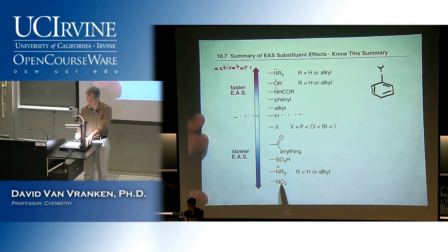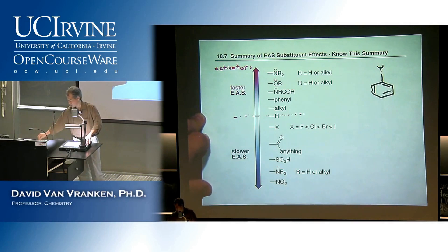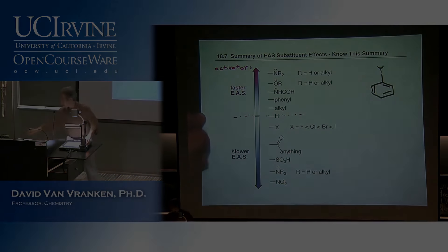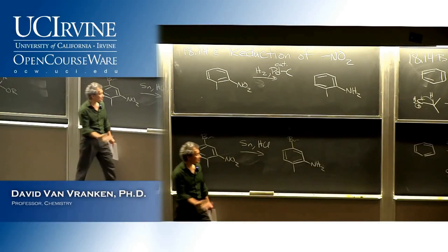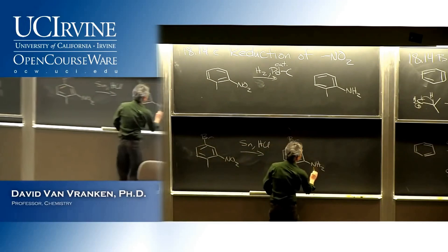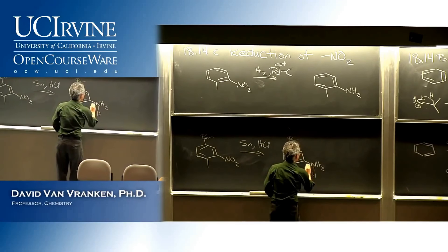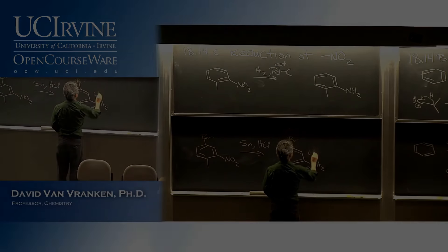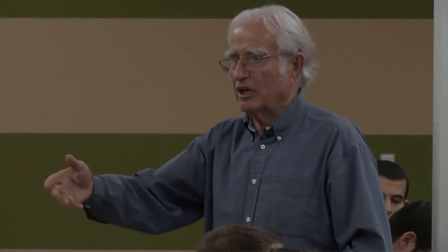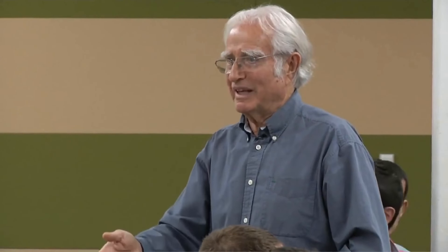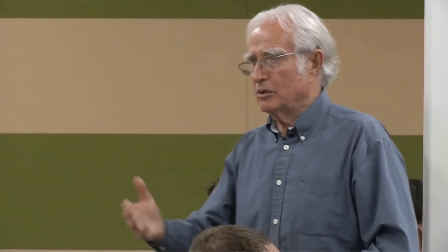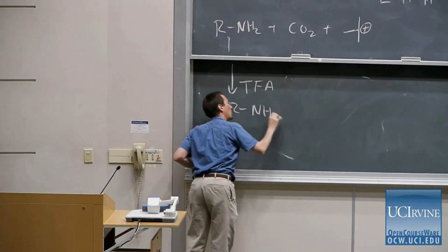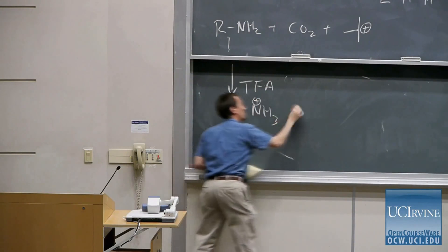Ammonium groups — nitro groups are the worst. The product of this reaction is actually an ammonium salt. Ammonium may not work with that thing, but it will protonate to give the ammonium salt.